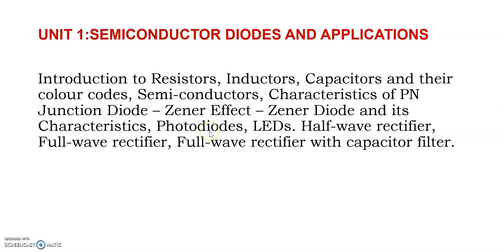Then we move into photodiodes. In renewable energy concepts, a solar panel takes light as input and gives current as output — similarly, a photodiode takes light as input and gives current as output. We also have LEDs — light emitting diodes. Then we move into important applications like half-wave rectifiers, full-wave rectifiers, and full-wave rectifiers with capacitor filters. Household power supply from a plug point is AC; we need to convert it to DC through rectification using diodes, and then use capacitor filters to achieve constant voltage.